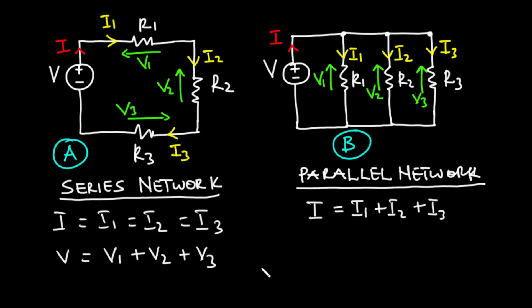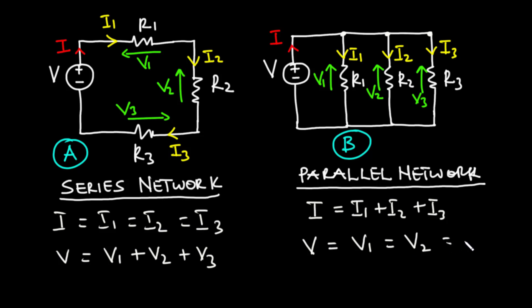For parallel networks, the connection is such that the same source voltage is applied across each of the resistors — that's R1, R2, and R3. So, if V is the source voltage, then V should be the same as V1, which is the voltage applied across R1, and then it should be the same as V2 and V3. So, for parallel networks, the source voltage is equal to V1 is equal to V2 is equal to V3, where V1, V2, and V3 are the voltages applied across R1, R2, and R3 respectively.